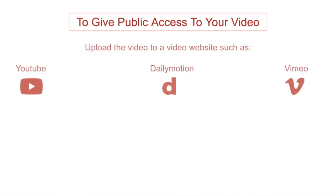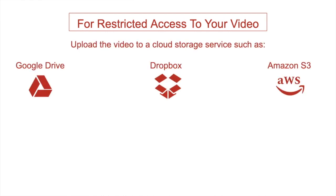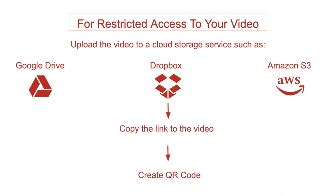Here's the first step. If you want public access to your video, you can upload your video on platforms such as YouTube and Dailymotion and copy the link. But if you want to restrict access to your video, you can upload it on platforms such as Google Drive and Dropbox and copy the shareable link.